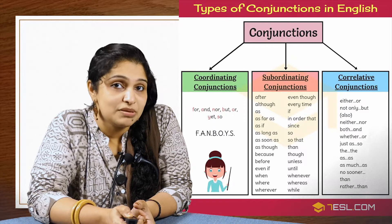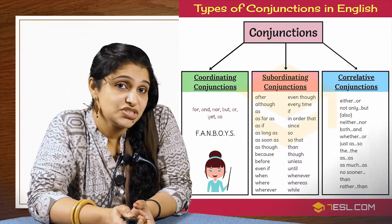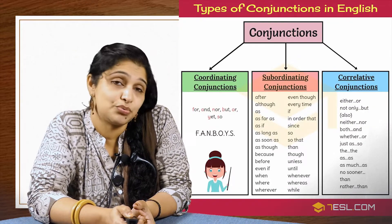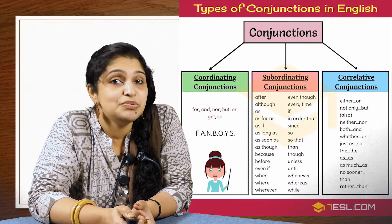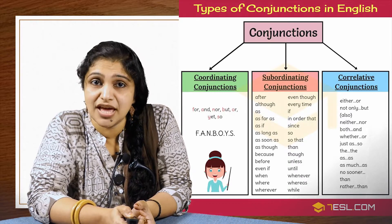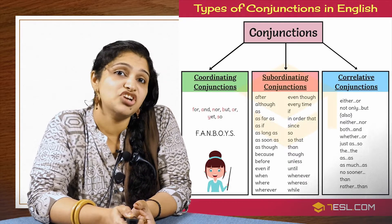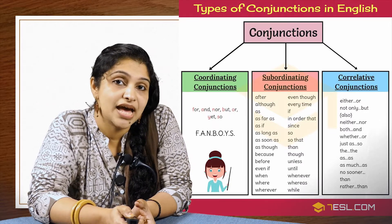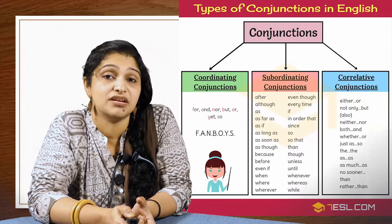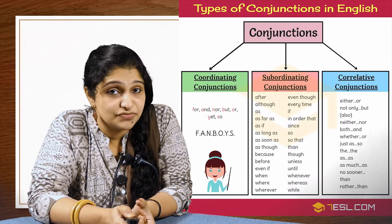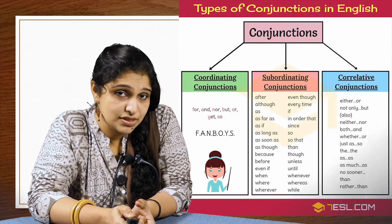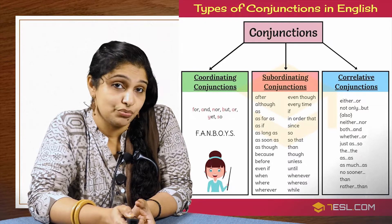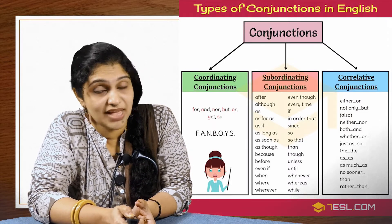Here is a big collection of conjunctions that indicate manner, place, time, reason, condition, comparison, and concession. Those conjunctions are sometimes used as relative pronouns and relative adjectives. So they connect words, phrases, and clauses, and they show you time, place, manner, reason, condition, comparison, etc.